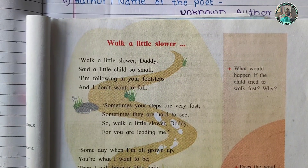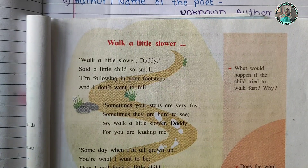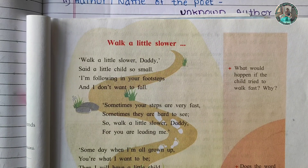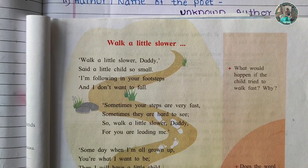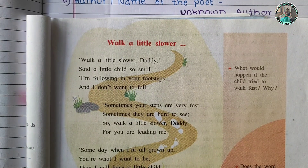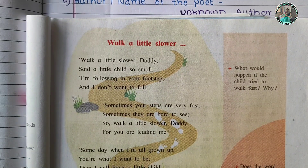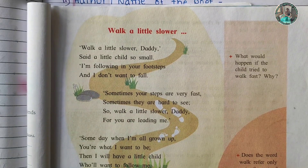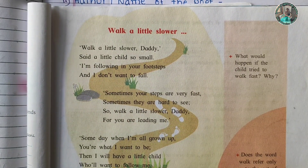Hello students, welcome to Sapna's homeschooling YouTube channel. Today we are going to see a poetic appreciation of the poem 'Walk a Little Slower,' which is from your 9th standard English course book. Namaskar Vidhiarthano, me Sapna teacher tumha sarvansu swagat karate. Aaj aapan 'Walk a Little Slower' hiji 1.1 poem chi poetic appreciation baghao. Poetic appreciation saathi tumhala 5 marks astat.